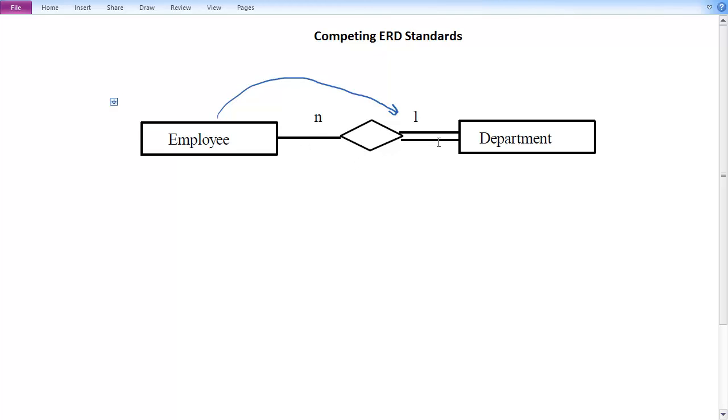For participation, on the other hand, we use look here, and we say a given department must participate in the having enrolled in employees. So you can't have, because this line is double, you can't have a department without employees. However, alternately, because this line is single, we can have an employee that does not participate in the belonging to a department.